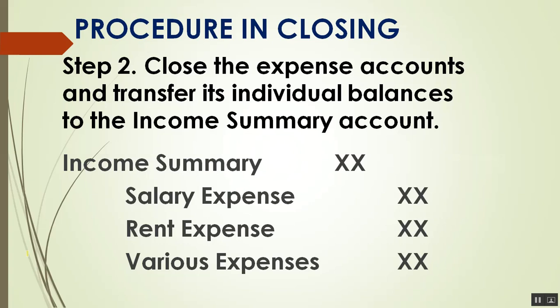Step 2 — E in REID — is closing the expenses account and transferring individual balances to the income summary account. You credit all the expenses because you are closing them to zero. The normal balance of expenses is debit, so to remove them you credit them. The journal entry is: debit Income Summary and credit the individual expense accounts.